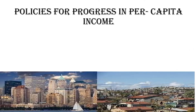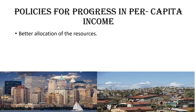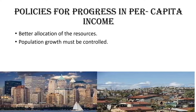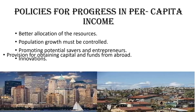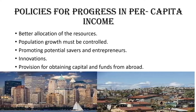There are certain policies to attain sustained progress in per capita income. The output growth curve must be shifted upwards by better allocation of resources or through the introduction of technological progress, or both. The population growth must be controlled as far as possible to keep per capita income above the subsistence wage rate. Promoting potential savers and entrepreneurs for increasing investment, bringing in innovations for technological progress, and provision for obtaining capital and funds from abroad to increase foreign investment in the economy are also key measures.